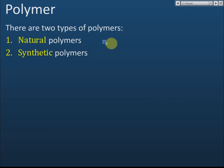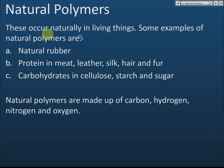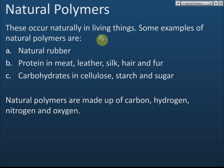There are two types of polymers: natural polymers and synthetic polymers. Examples of natural polymers are natural rubber, protein, and carbohydrates. Natural polymers occur naturally in living things.